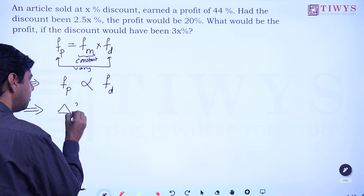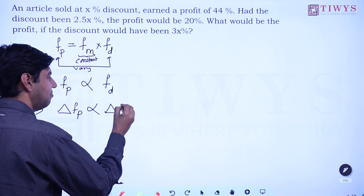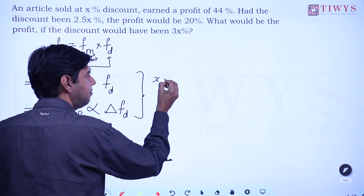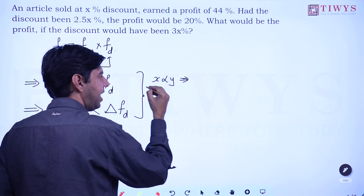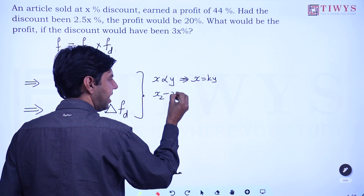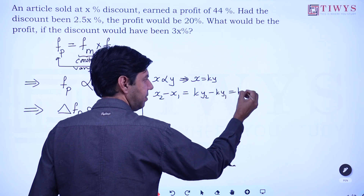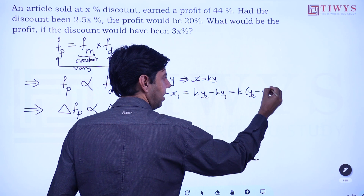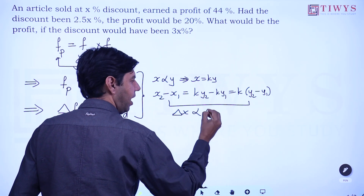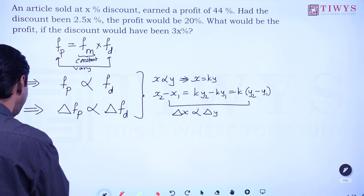If two things are directly proportional, the change in them is also directly proportional. If x equals k times y, then x2 minus x1 equals k times y2 minus k times y1, which equals k times (y2 minus y1). So the change in x is k times the change in y — a very common result: if two values are directly proportional, their differences are also directly proportional.